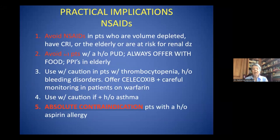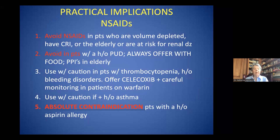The practical implications: avoid NSAIDs in patients who are volume depleted or have chronic renal insufficiency, or the elderly who generally have more risk for renal disease. Avoid these drugs in patients with a history of active peptic ulcer disease. Always offer these drugs with food, and give with PPIs in elderly individuals. Use with caution in patients with thrombocytopenia or a history of bleeding disorders. A trick: you can offer celecoxib if you need to use NSAIDs, because celecoxib does not have the same antiplatelet effect.